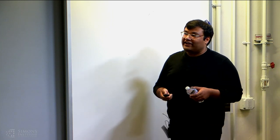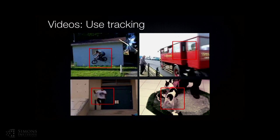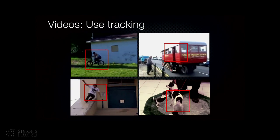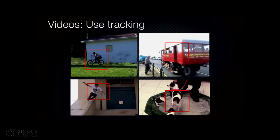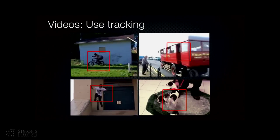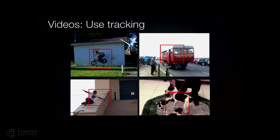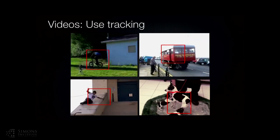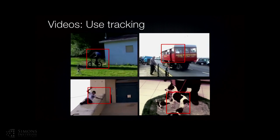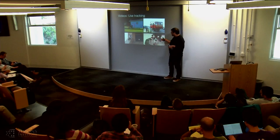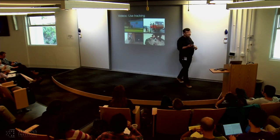We want to find data where viewpoint invariance comes for free, and that is videos. We download thousands of videos from YouTube and track patches. In these videos, objects are moving — they undergo deformations or viewpoint changes. For example, initially a person is standing and by the time the video ends they're in a slanted position. Similarly, a dog's viewpoint completely changes from start to finish of the video. We can use all this data to learn viewpoint invariance between instances.